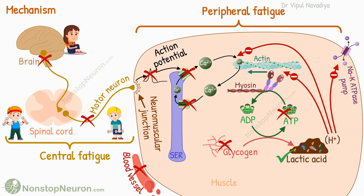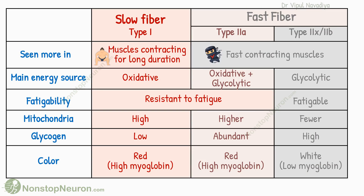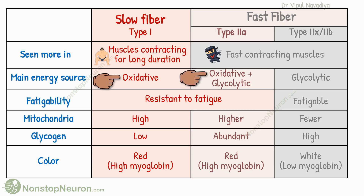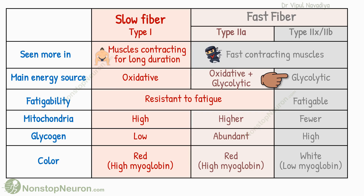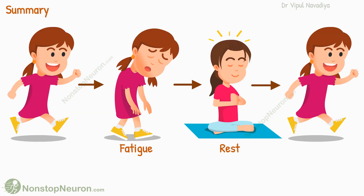As a bonus point for those who have seen the video on types of muscle fiber: Type 1 and Type 2A fibers can use oxidative metabolism for energy, so they are more resistant to fatigue. Whereas Type 2X/2B fibers mainly use the glycolytic pathway, so they are more prone to fatigue.